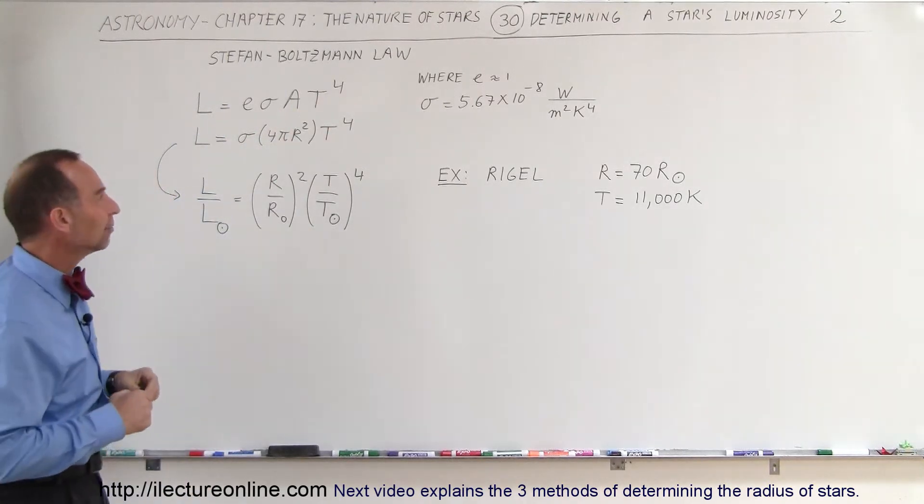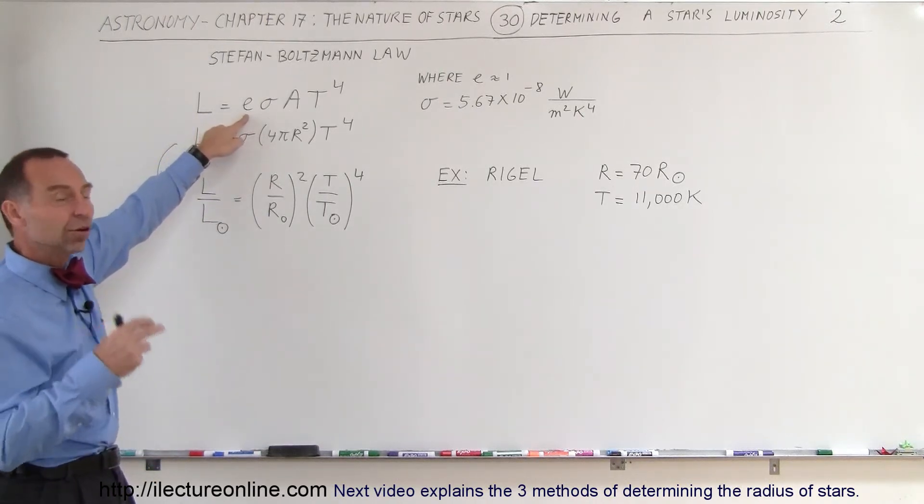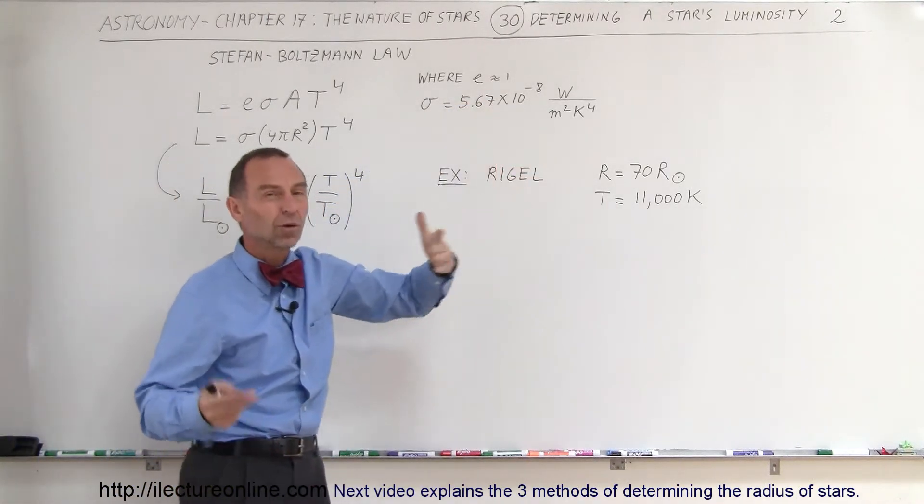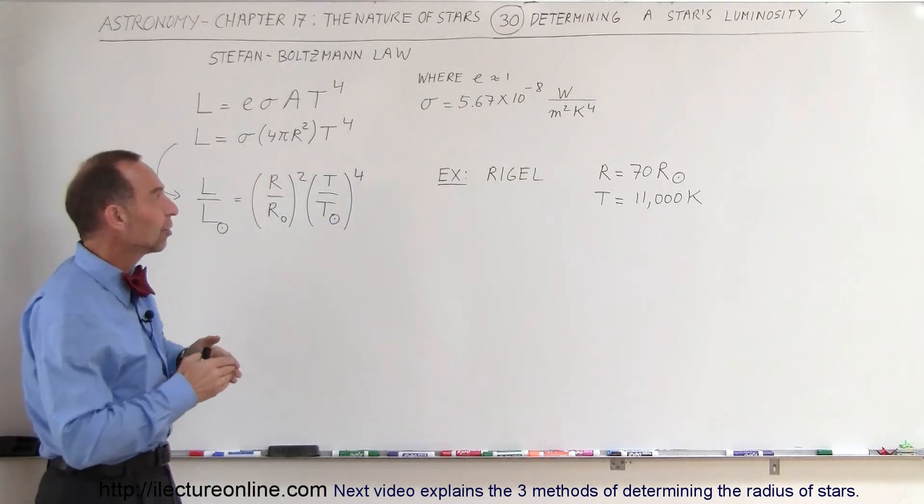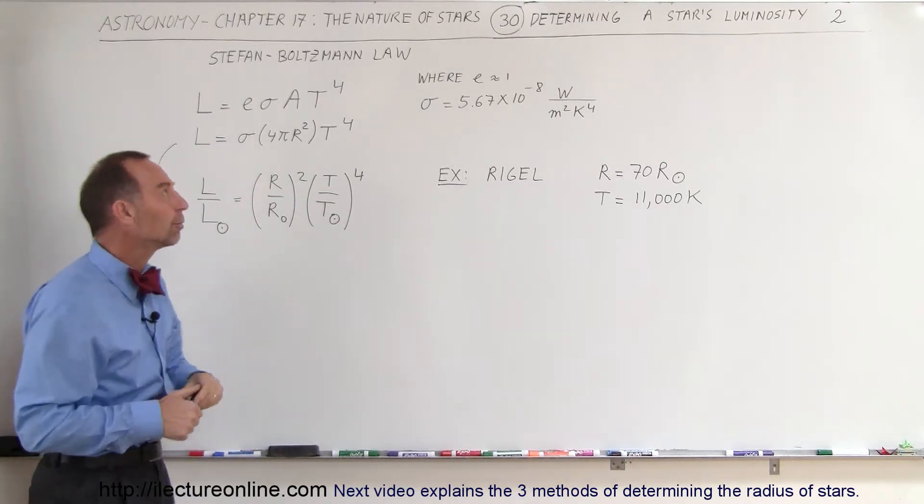The temperature must be in Kelvin. The emissivity of an object depends on the material, but for stars, the emissivity usually is number one. Emissivity goes between zero and one, so that means all of the energy it puts out is in the form of radiation.